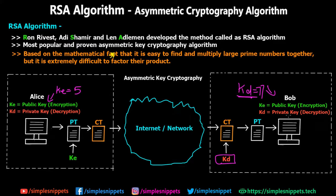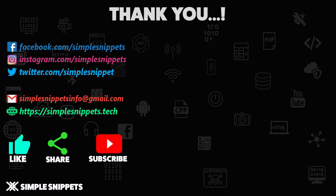That's it for this video. I hope you understood the RSA algorithm — the mathematical logic behind it, how asymmetric key cryptography works, and we also saw a basic example using small prime numbers to prove that encryption and decryption is possible. Thanks for watching. If you liked this video please give it a thumbs up, share it with your friends, subscribe to the channel, and turn on notifications so you get notified whenever a new video is uploaded. See you in the next video — peace!